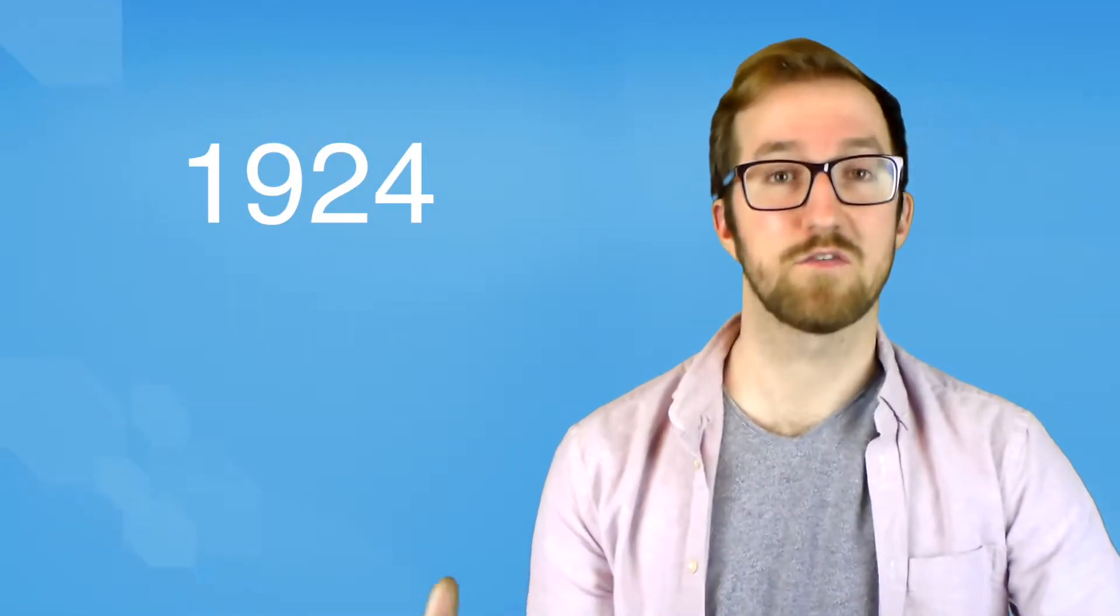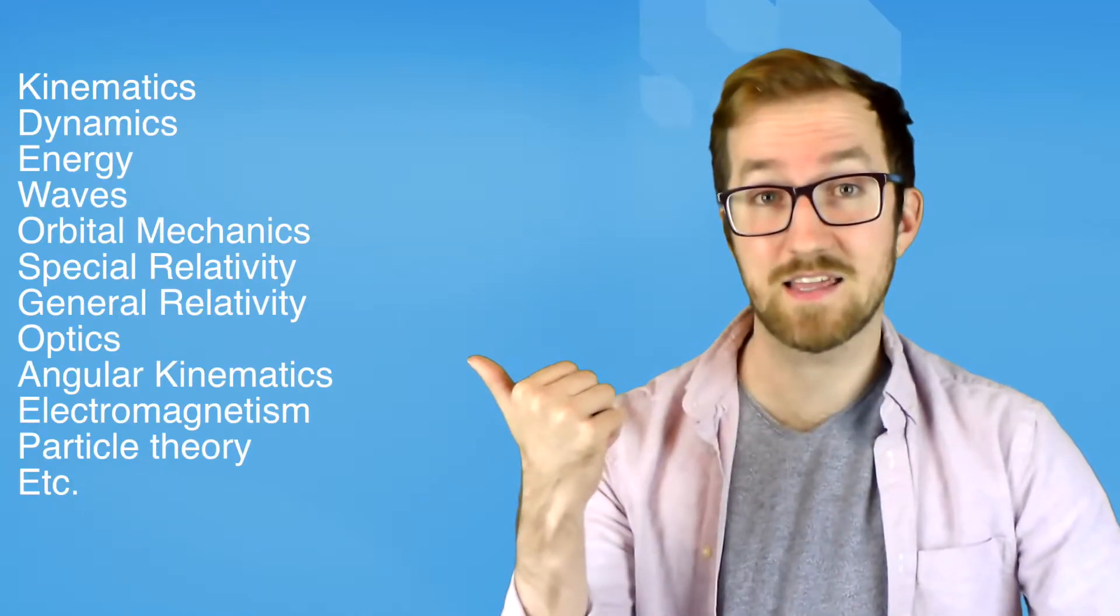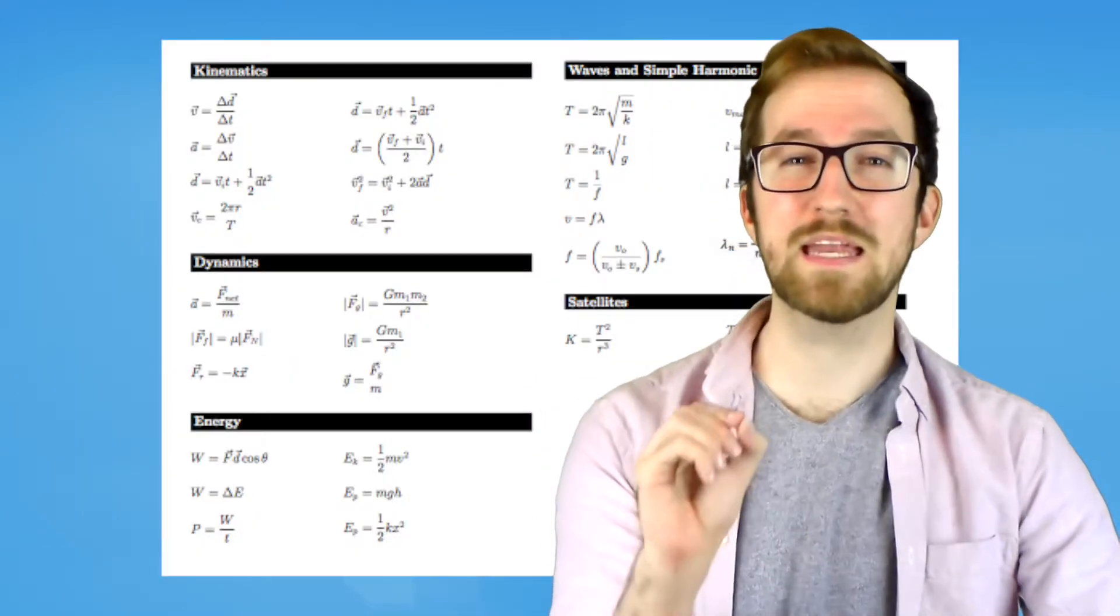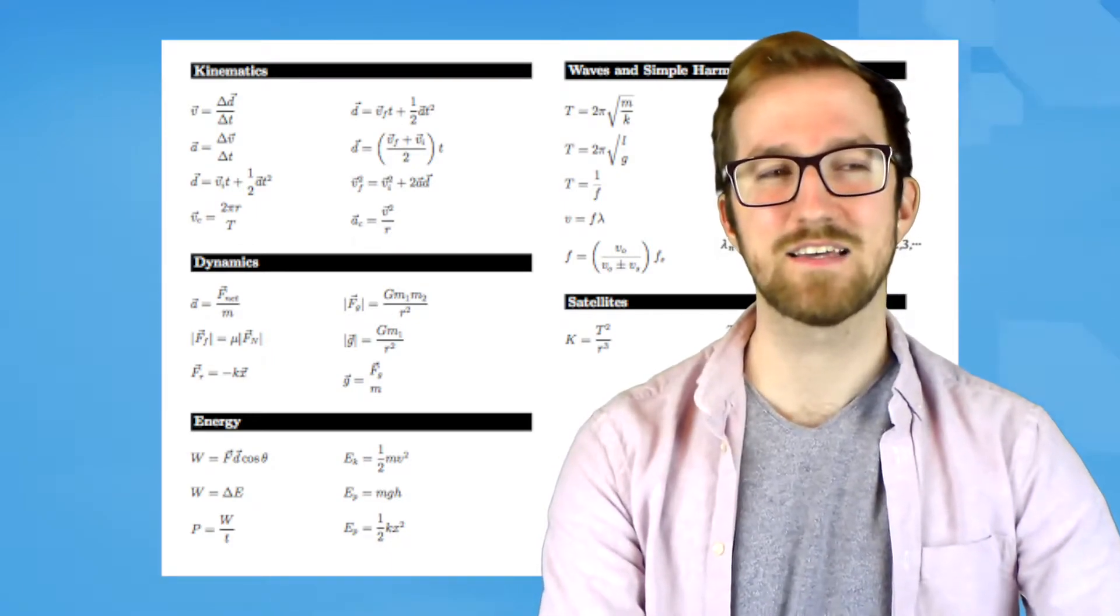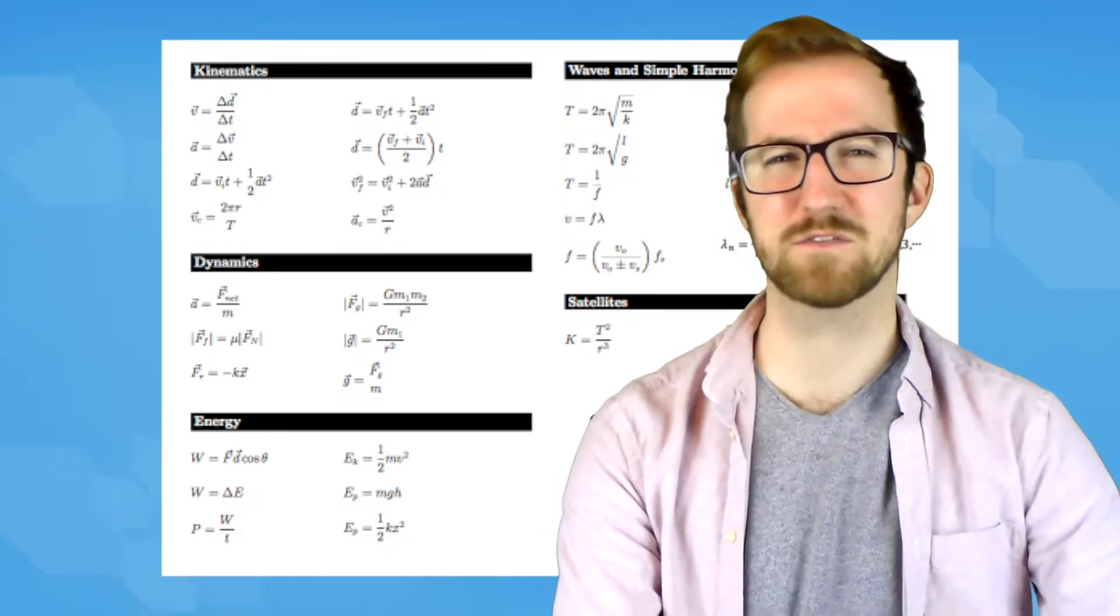He made his discovery in 1924. A lot of physics was already discovered by then. All of these things and all of these equations. But what made him so different, what made him so brilliant, was that he saw a connection that nobody else really did.